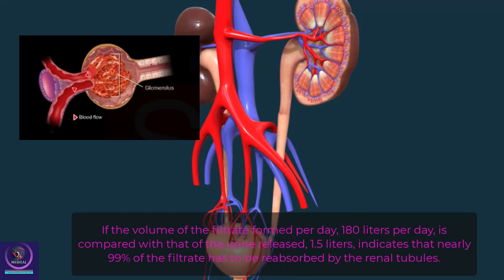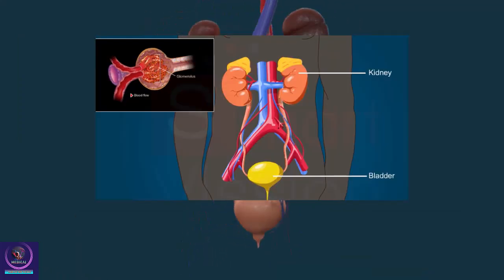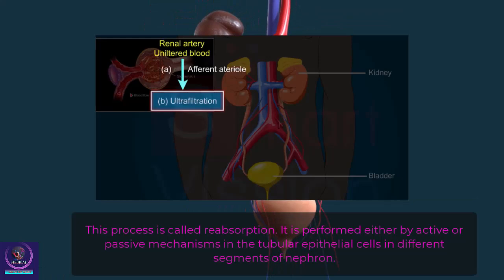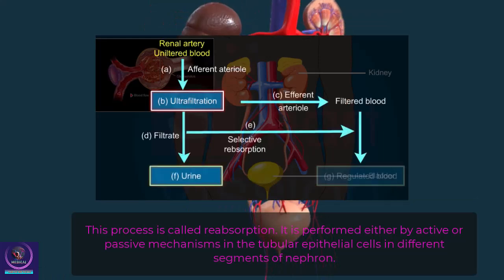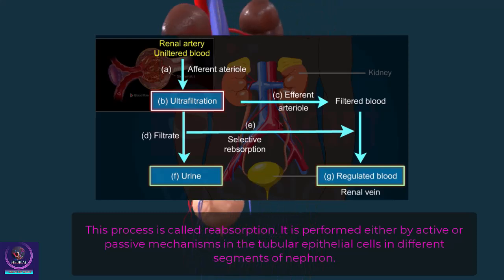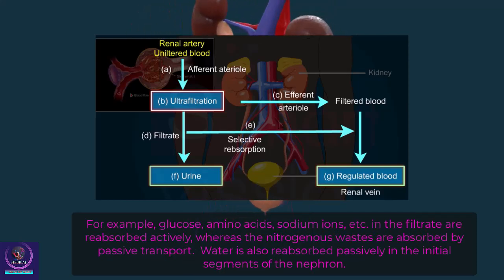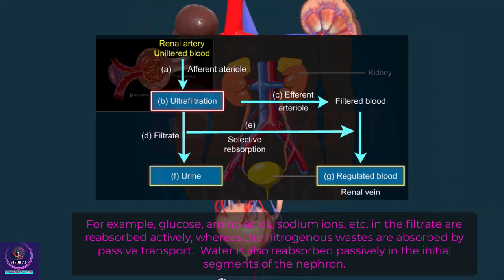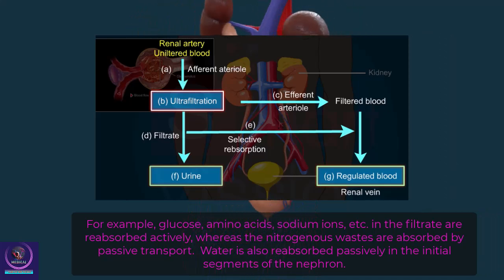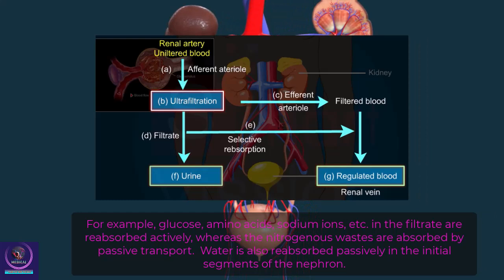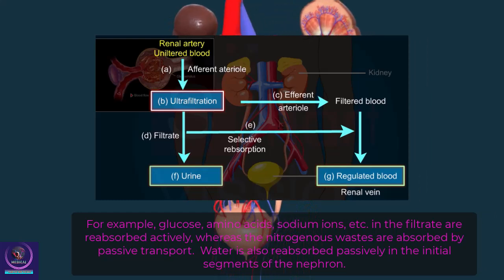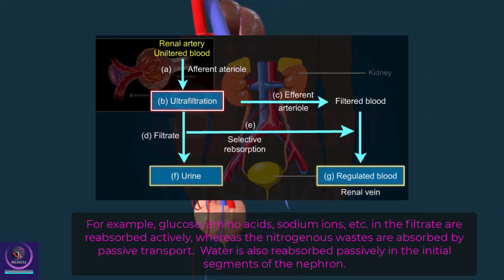This process of reabsorption is performed by either active or passive mechanisms in the tubular epithelial cells in different segments of the nephron. For example, glucose, amino acids, and sodium ions in the filtrate are reabsorbed actively, whereas nitrogenous wastes are absorbed by passive transport.